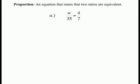A proportion is an equation that states that two ratios are equivalent. So we have W over 35 equals 4 over 7. Because they're equal to each other, it means that they are equivalent. Now we must solve for W and find out what W equals.